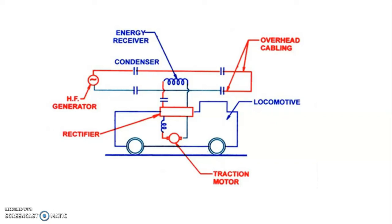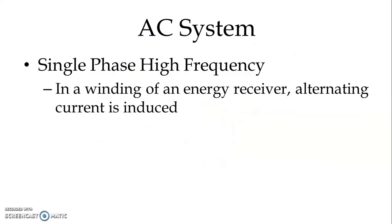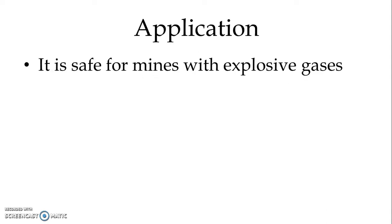The winding of the energy receiver is kept 40 millimeters away from the overhead cables. Alternating current is induced in the winding of the energy receiver, and the induced AC voltage is then rectified at the locomotive and fed to the DC traction motor. This system is safe for mines with explosive gases because it is contactless conduction of current, and sparking is avoided.